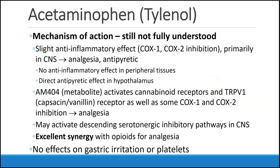The next medication is closely related to NSAIDs: acetaminophen, or Tylenol. Its mechanism of action is still not fully understood. It has a slight anti-inflammatory effect probably mediated through COX-1 and COX-2 inhibition, primarily in the central nervous system, causing analgesia and antipyretic effects. There doesn't seem to be any anti-inflammatory effect in peripheral tissues. There's also a direct antipyretic effect in the hypothalamus. In addition, a metabolite called AM404 appears to activate cannabinoid receptors and TRPV1 receptors, as well as some COX-1 and COX-2 inhibition, also contributing to analgesia.